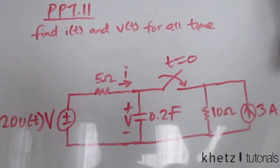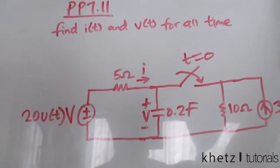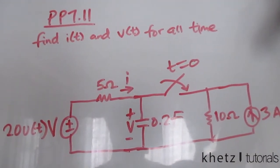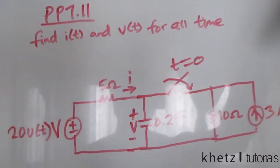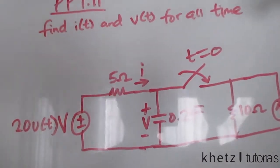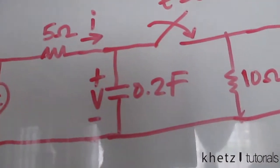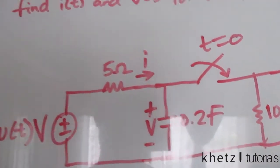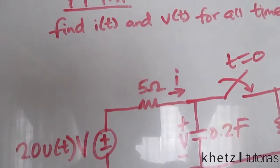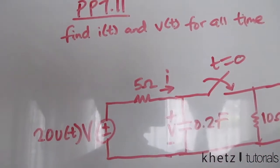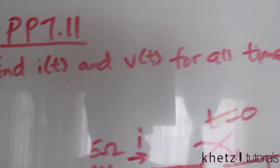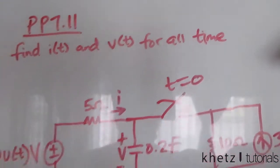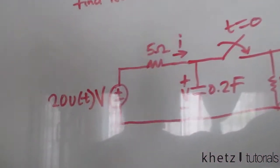Welcome to GE Tutorials. In this video I'll be covering practice problem 7.11. We are asked to find i(t) and v(t) for all time.